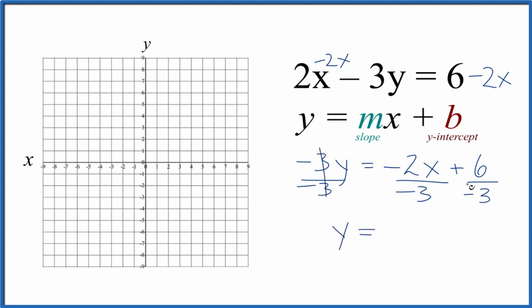So now these cancel out. So now we have negative 2 over negative 3. We can just call that 2 thirds because we have the negative on the top and the bottom. 2 thirds x minus 2 because 6 divided by negative 3 is negative 2. And now we have slope-intercept formula, and it's really pretty easy to graph at this point.